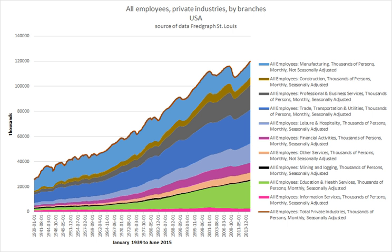Wage labor is the socio-economic relationship between a worker and an employer, where the worker sells their labor under a formal or informal employment contract. These transactions usually occur in a labor market where wages are market determined. In exchange for the wages paid, the work product generally becomes the undifferentiated property of the employer, except for special cases such as the vesting of intellectual property patents in the United States where patent rights are usually vested in the original personal inventor.